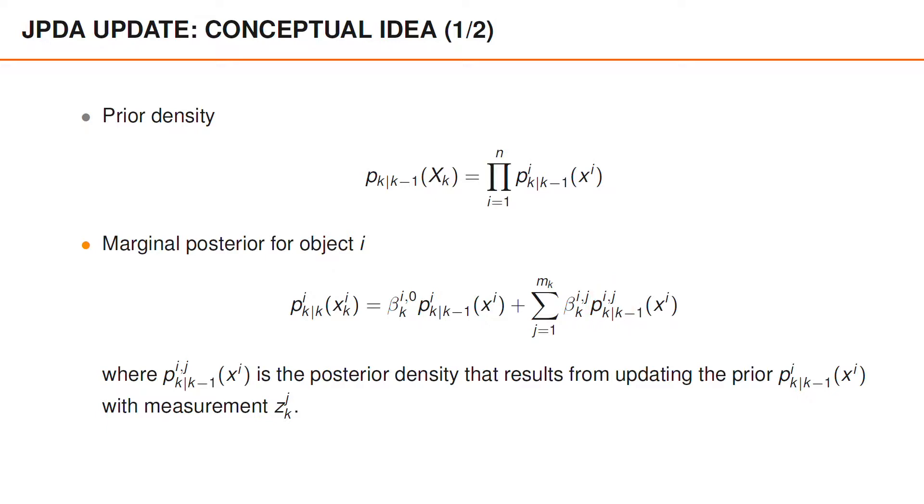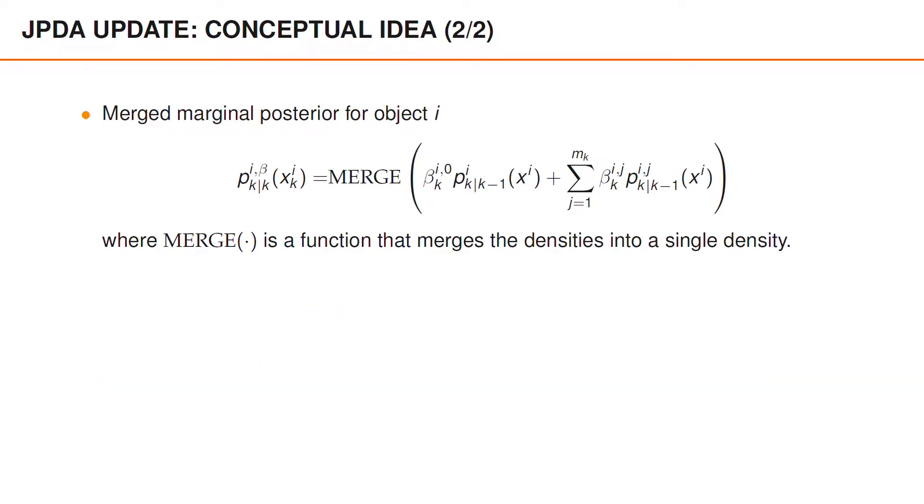So you should note that these marginal posteriors are multimodal, in other words they are mixture densities. Next, for each object we merge the marginal posterior using some merging function that merges the densities into a single density. So a typical choice here is to use moment matching that minimizes the Kullback-Leibler divergence.